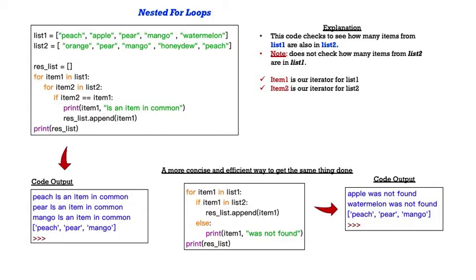In our for loops for item in list 1, item 1 is our iterator for list 1, and item 2 is the iterator for list 2. We have a res underscore list equals empty. So that's our empty list. It's in that list that we will append those items that appear in list 2 from list 1. So we go through this for item in list 1. It traverses peach, apple, pear, mango, and watermelon in list 1. Then it goes for item in list 2, orange, pear, mango, honeydew, and peach.